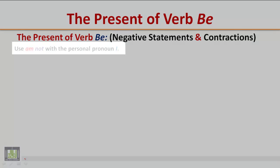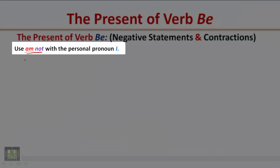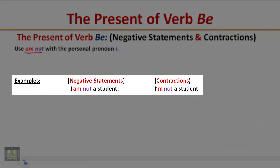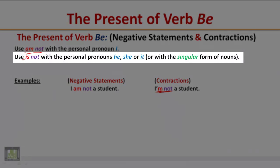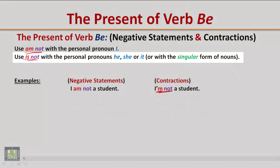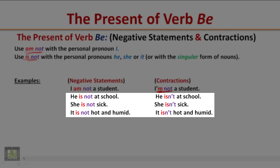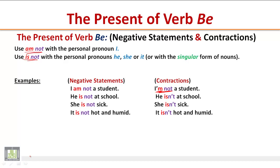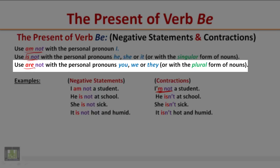The present of verb be: negative statements and contractions. Use 'am not' with the personal pronoun 'I'. Example: I am not a student. Contracted form: I'm not a student. Notice that the verb 'am' is not contracted with the word 'not', so do not contract 'am' with 'not'. Use 'is not' with he, she, or it, or with a singular noun. Examples: He is not at school / He isn't at school. She is not sick / She isn't sick. It is not hot and humid / It isn't hot and humid.